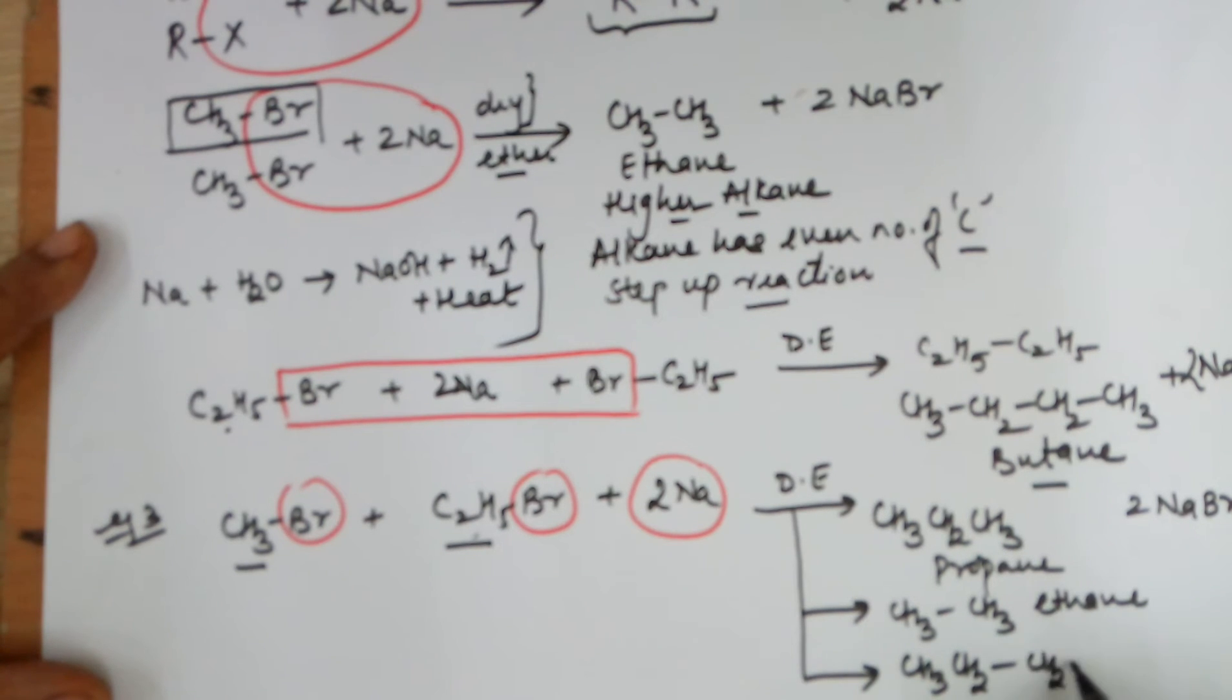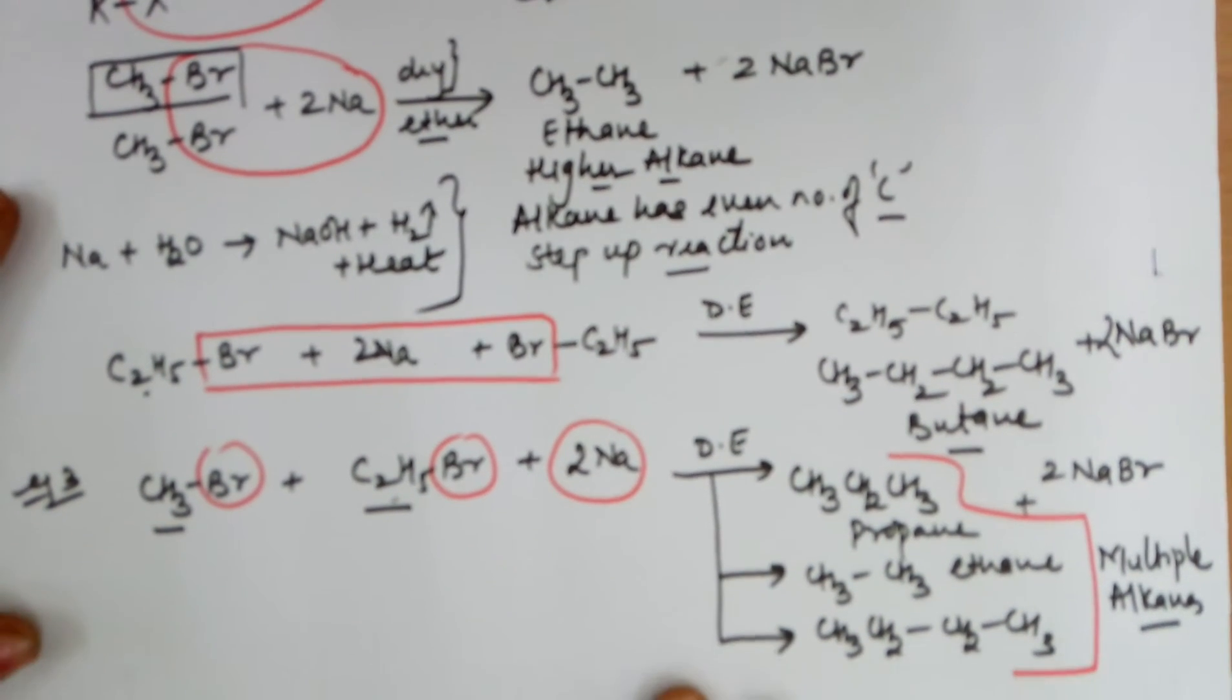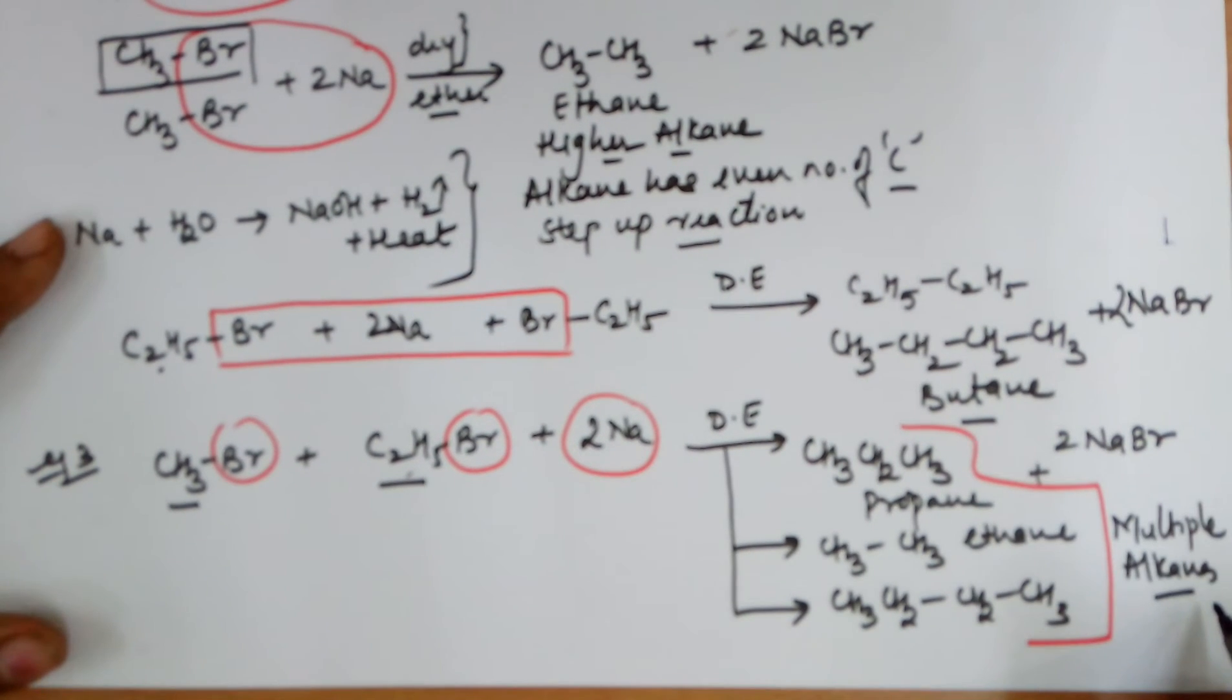Ethyl from one side, ethyl from the other side. Hence you are ending up in not a single product but a set of three products. So you have multiple alkanes formed which are difficult to separate.